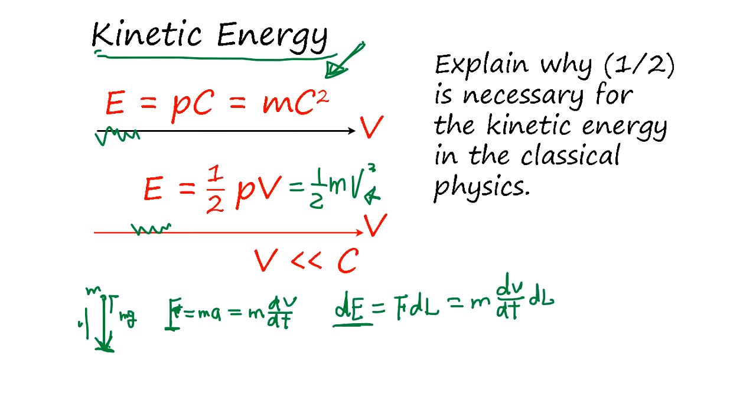So energy is 1 over 2 mv squared. Make sense? So this is classical physics. The question is why energy is force times distance.